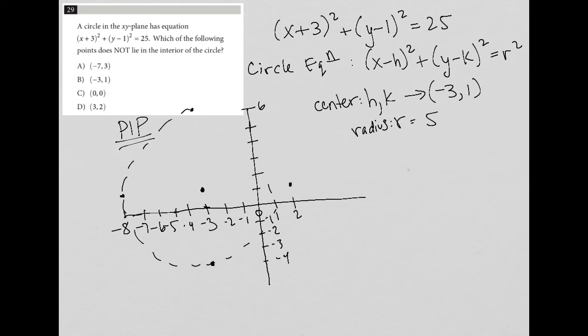So which of the following points does not lie in the interior of the circle? Well let's see (-7,3), this is 3 and this is -7 that's right there that's inside the circle. How about (-3,1)? Well yeah that's the center so that's definitely inside. How about (0,0)? That's also inside the circle. And then (3,2), 3 and 2 is way over here that's outside the circle so answer choice D is the right answer.